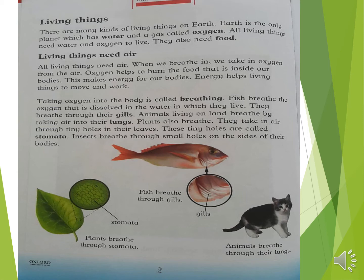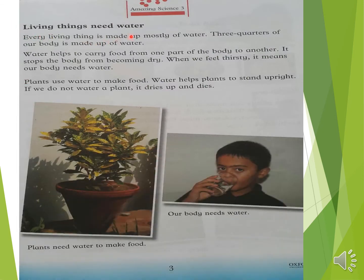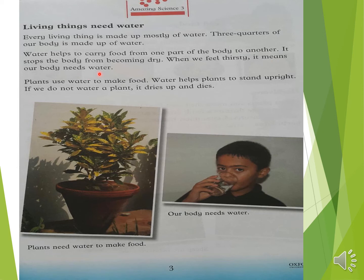Turn to page number 3: Living Things Need Water. Every living thing is made up mostly of water. Three quarters of our body is made up of water. Our body depends on water. Water helps to carry food from one part of the body to another. It stops the body from becoming dry and protects the body. When we feel thirsty, it means our body needs water.